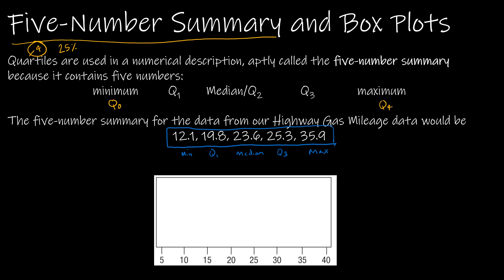When you're creating a box plot — and typically we're not going to do this by hand, but it's valuable to do it by hand just so you can see how they are constructed — the values are 12.1, 19.8, 23.6, 25.3, and 35.9. All I'm going to do is put a little dashed line above each of those values as best I can. The middle three values, 19.8, 23.6, and 25.3, will always be the first quartile, the median, and the third quartile.